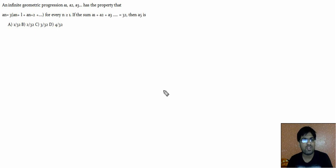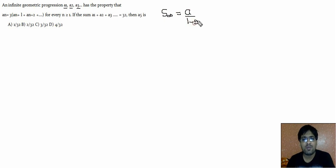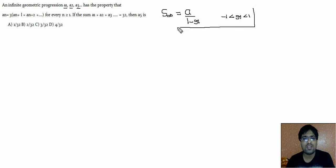This is a very important type of question — every year you will get two or three questions from this section. First, understand that the sum to infinity for a GP is a divided by (1 minus r), where r ranges from minus 1 to 1. This is important to learn.